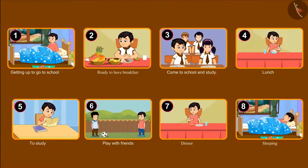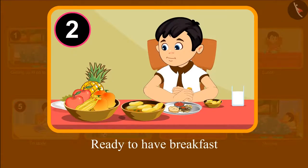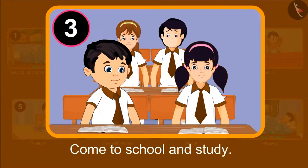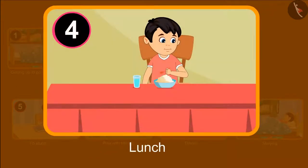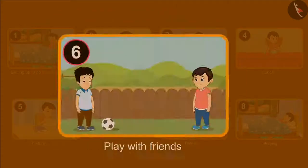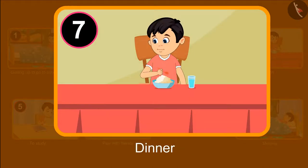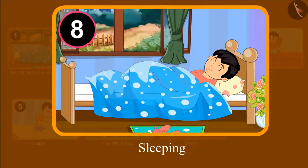Chotu got up early in the morning to go to school. Then he got ready and had breakfast. After that he went to school and studied. Then came back from school in the afternoon and had food. Then he studied again. After studying, he went to play with his friends. And then went to sleep after having dinner. This was Chotu's routine.